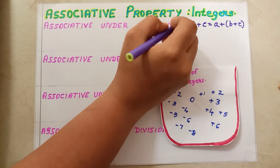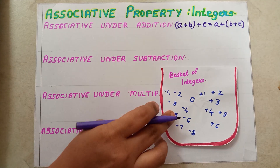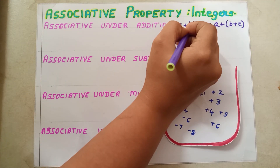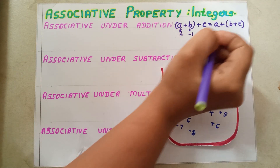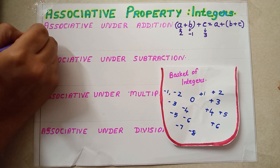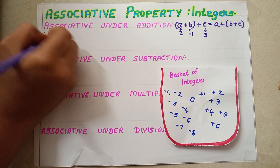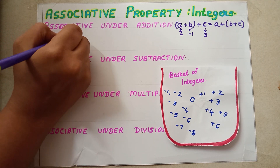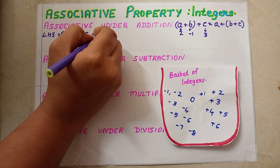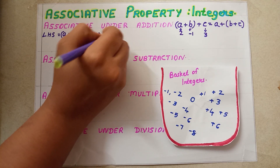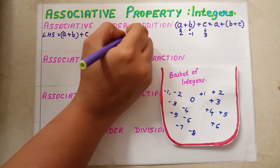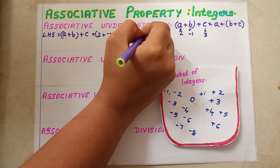So first I am going to select A, B, C from the set of integers. A is 2, B is minus 1, and C is 3. Now we find LHS. LHS equals (A + B) + C, which is (2 + (−1)) + 3. That equals 1 + 3, which equals 4.